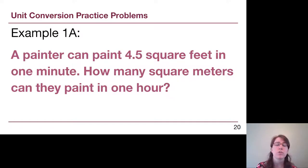The first example that will have its own video is a painter can paint 4.5 square feet in one minute. How many square meters can they paint in one hour? A reminder for the train tracks method, the first thing that we want to do is identify our starting point. Our starting point here is 4.5 square feet per minute. And our ending units, our target, is square meters per hour. So we'll see how that plays out in that separate example video.